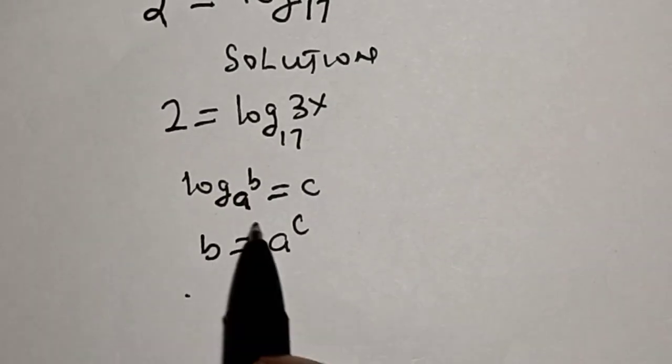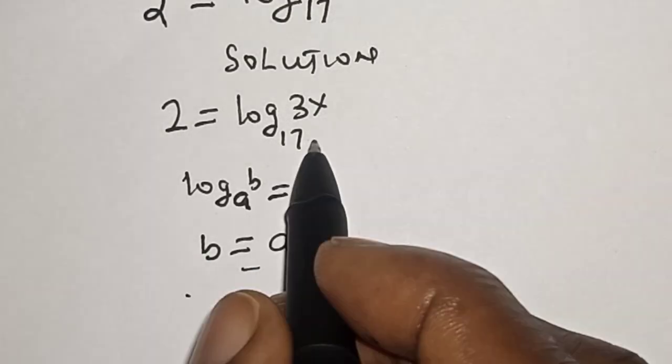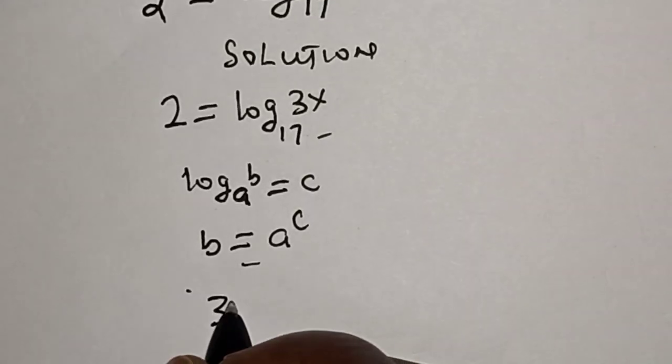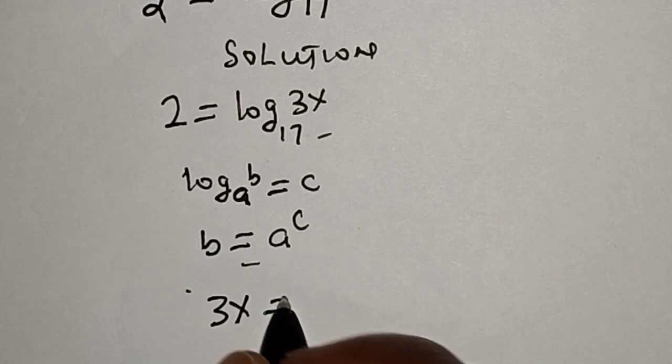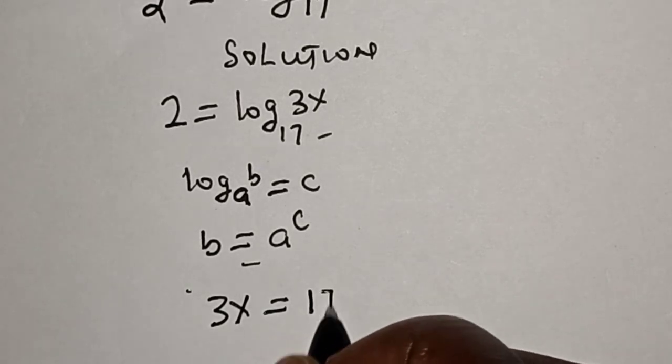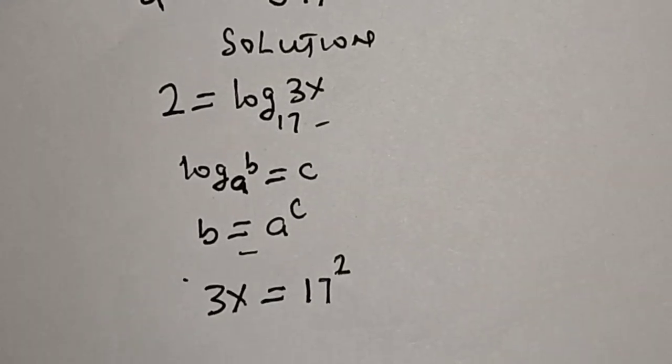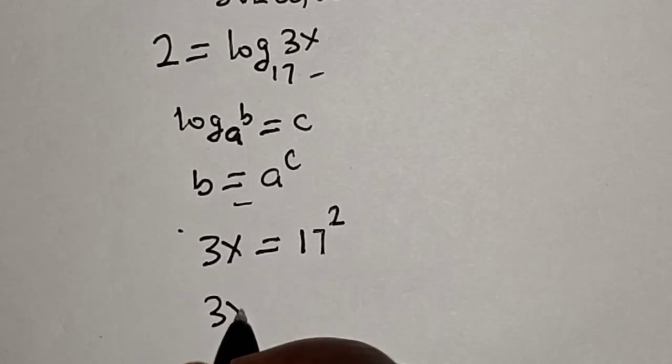Then from this equation, if you relate this together, 3x equals 17 squared. Now 3x equals 289.